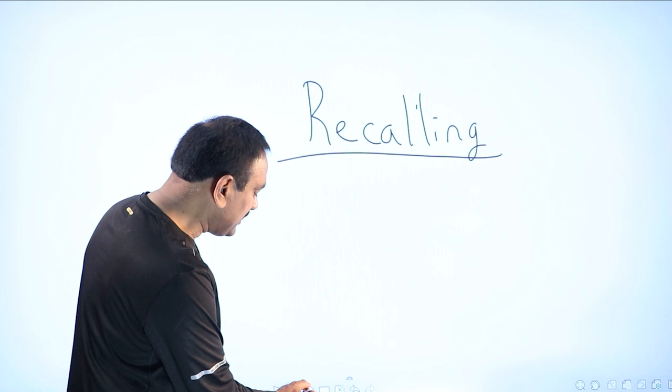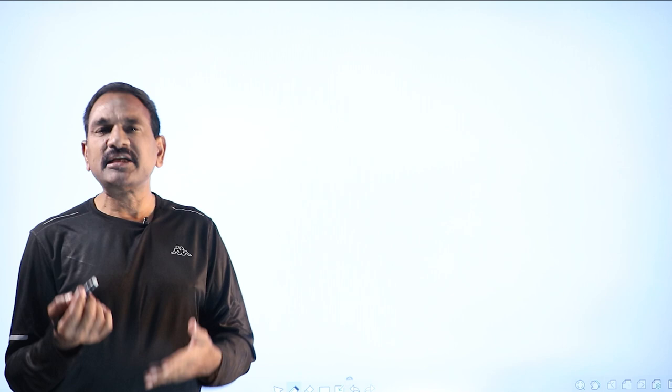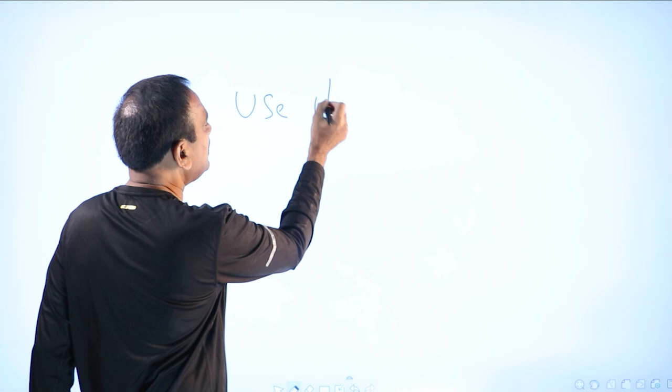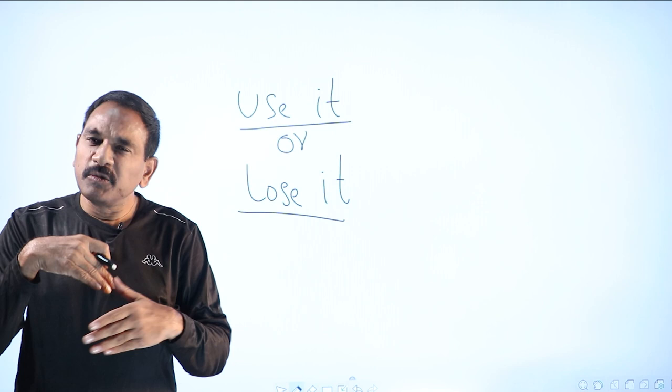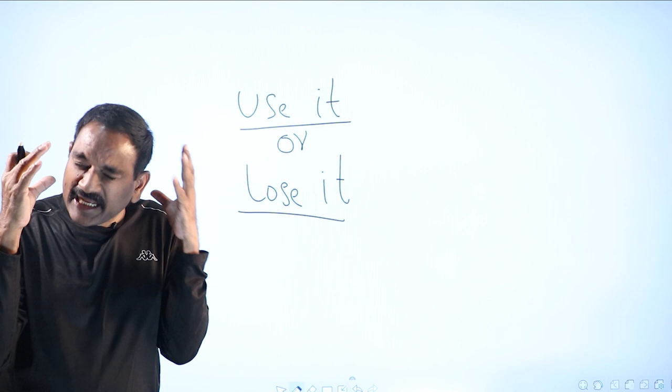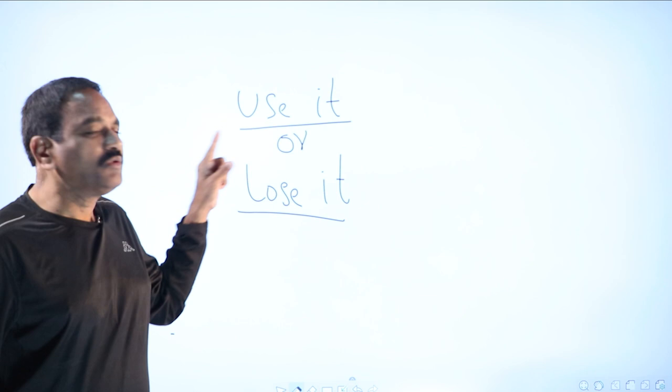Just let me tell you one thing. There is nothing called permanent memory in the brain. Brain keeps on forgetting. Brain has got something called one formula: Use it or lose it. Anything you learn, if you are putting that into practice, into use, then brain will retain and keep it fresh. But the moment you stop using it, brain will automatically forget.